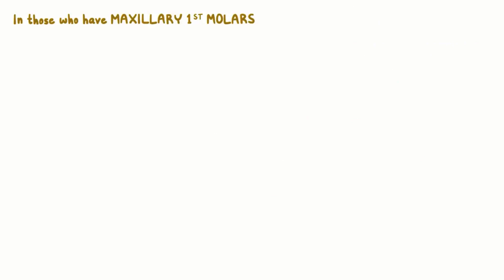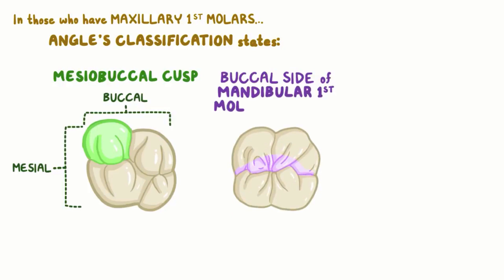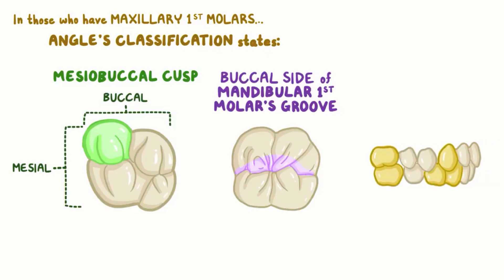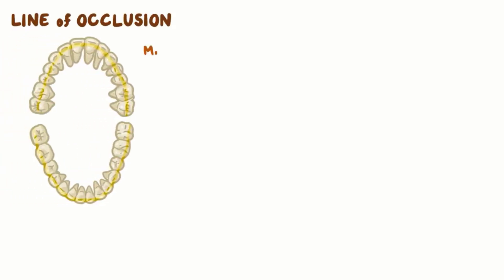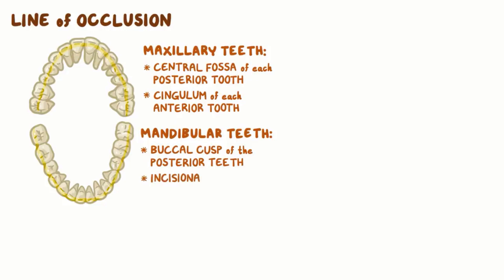In those who do have maxillary first molars, Angle's classification states that the mesiobuccal cusp — which is the cusp at the intersection of the mesial and buccal sides of the tooth — normally lines up with the buccal side of the mandibular first molar's groove, rather than right in the middle of the valley. In the canine system, the maxillary canine slides right down in between the mandibular canine and the mandibular premolar, sitting half on the distal part of the mandibular canine and half on the mesial part of the mandibular premolar. In general, the teeth align on an imaginary arc called the line of occlusion. For the maxillary teeth, it runs through the central fossa of each posterior tooth and through the cingulum of each anterior tooth. As for the mandibular row, it runs through each buccal cusp of the posterior teeth and the sharp incisal edges on the anterior teeth.